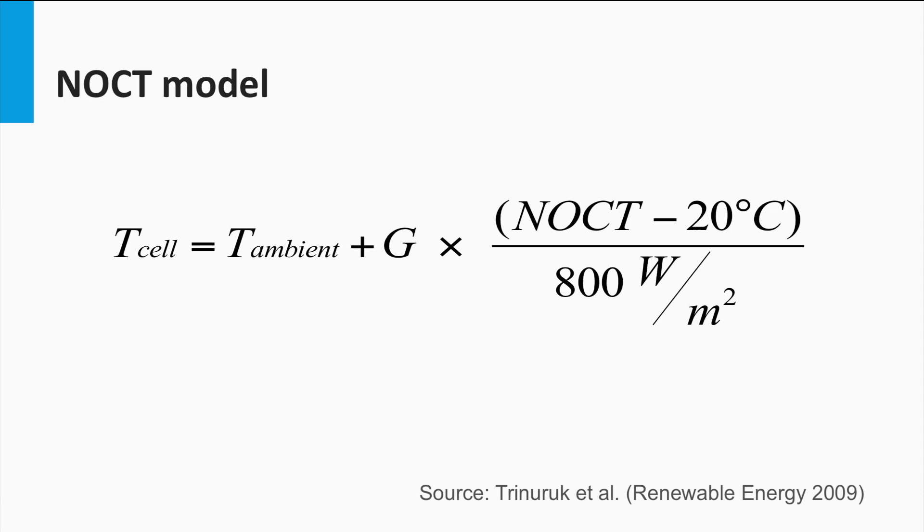This model is sometimes called the NOCT model, due to the use of the nominal operating cell temperature or NOCT of the PV cell or module. The NOCT is a parameter defined for a particular PV module. NOCT is the temperature attained by the PV cell under an irradiance of 800 watts per square meter, with a nominal wind speed of 1 meter per second and an ambient temperature of 20 degrees Celsius. Here, G is the irradiance at the instant when the ambient temperature is T ambient. The model gives the corresponding cell temperature as T cell. As can be seen from this equation, the cell temperature is not only a function of the ambient temperature, but also of the irradiance.